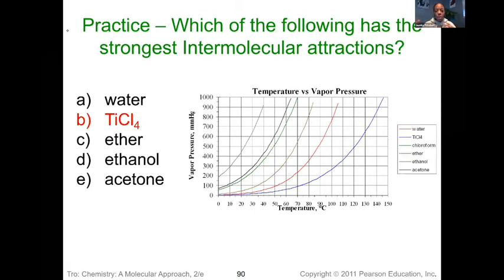We should know that titanium tetrachloride is the only ionic compound here. So even if we didn't have the vapor pressure curve information, we could still make that prediction — the picture just helps support it.